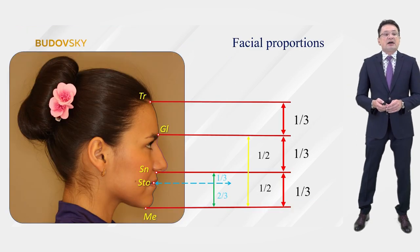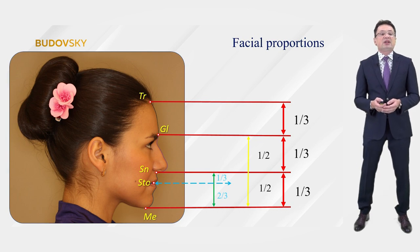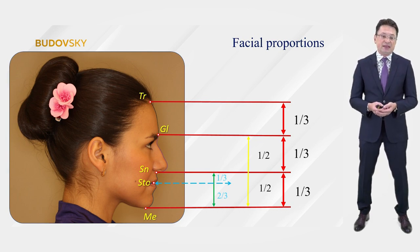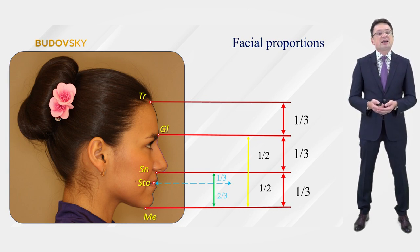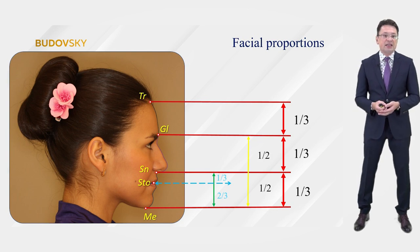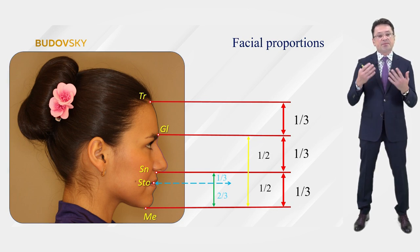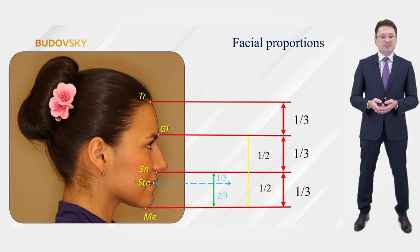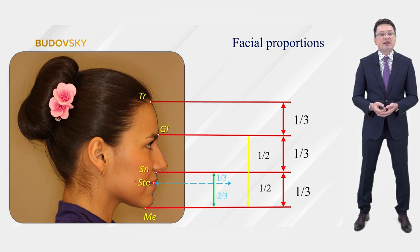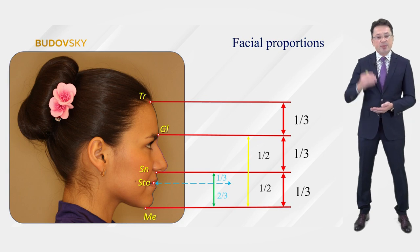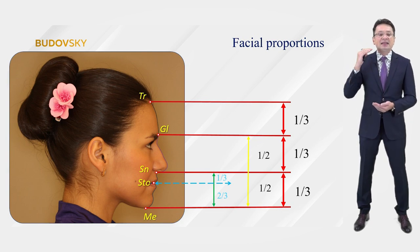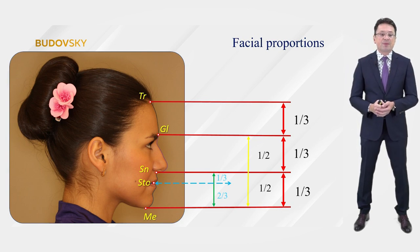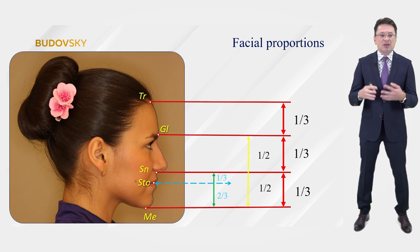It is also very important to evaluate the patient's profile. This gives us a lot of information about the height of the bite and about the position of the lower jaw. If you take several reference points, you can divide the profile into thirds: upper, middle, and lower. They are approximately equally balanced.